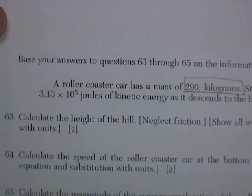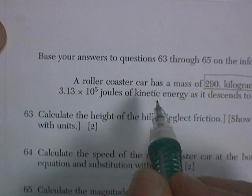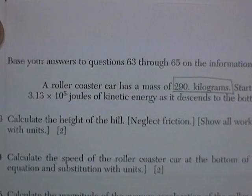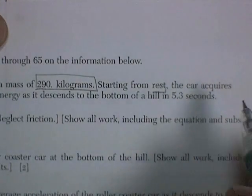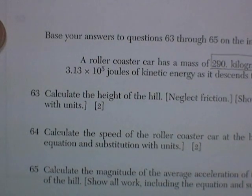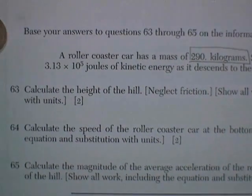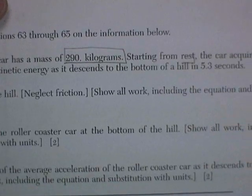And the car acquires 3.13 times 10 to the 5 joules of kinetic energy. Oh, I love these energy problems. And it descends to the bottom of a hill in 5.3 seconds. So these are two pointers, so we've got to show all our work with units. Calculate the height of the hill. Show our work, including the equation and substitution.